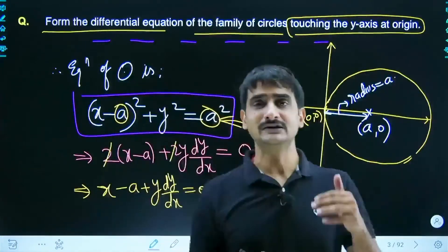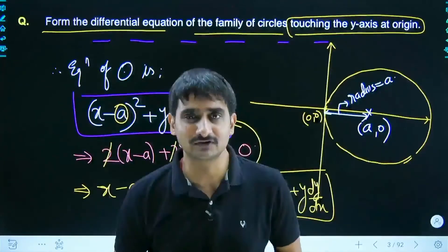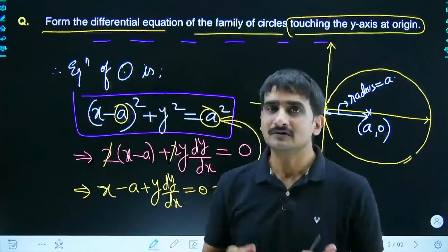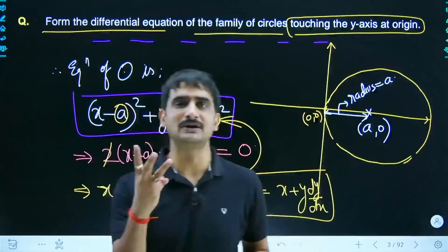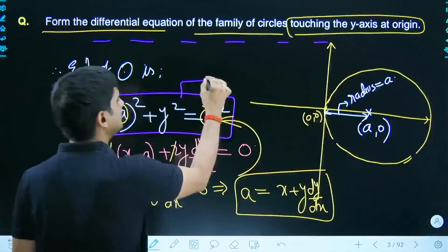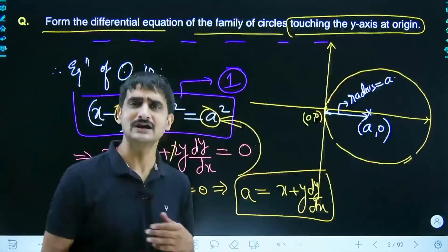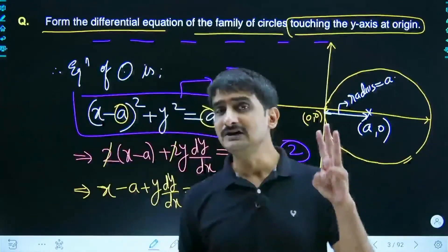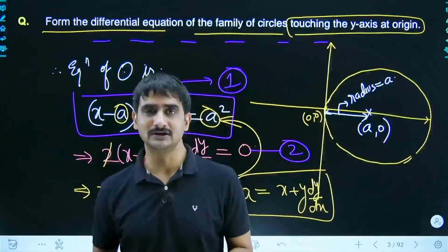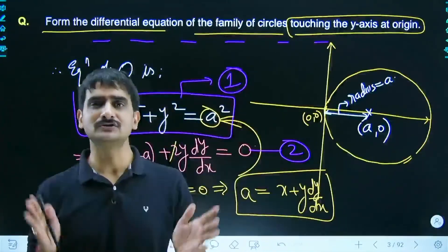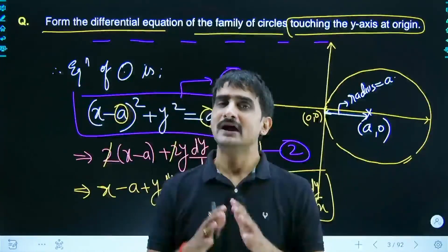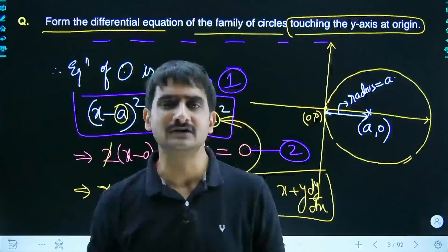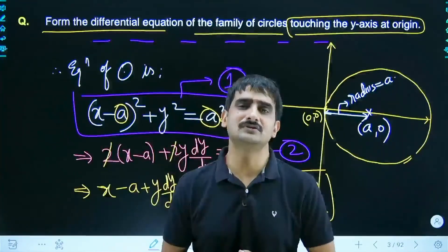The method for forming a differential equation: write the equation of the family of curves, count the unknown constants, and differentiate exactly that many times. For example, if there are three unknown constants, you differentiate three times, giving you three additional equations. With the original equation that's four equations total — use them all to eliminate the unknown constants completely.